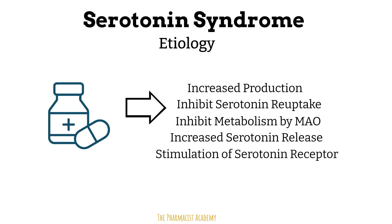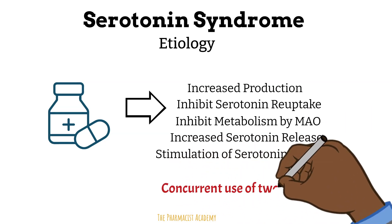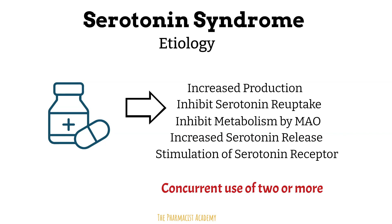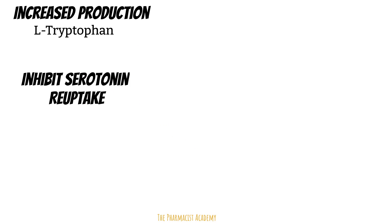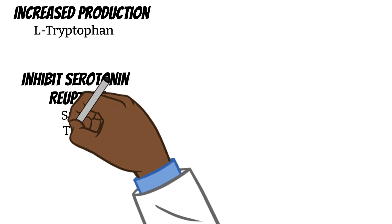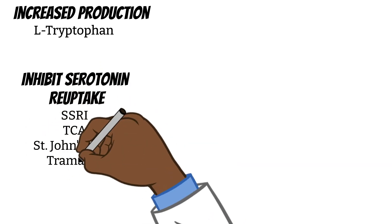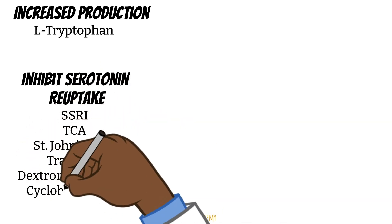Serotonin syndrome typically occurs when a patient takes two or more medications with these mechanisms. L-tryptophan is an example of a medication that increases serotonin production — it's sold as a supplement and is the precursor of serotonin. Medications that inhibit serotonin reuptake prevent it from moving back into cells to be broken down, and these include SSRIs, TCAs, St. John's wort, tramadol, dextromethorphan, and cyclobenzaprine.